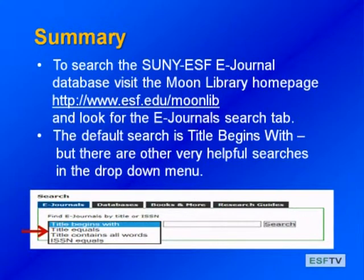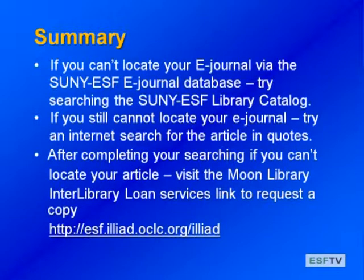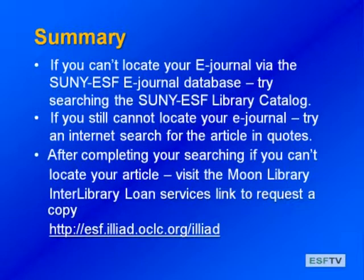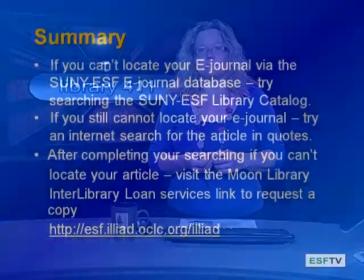To summarize: to search the SUNY ESF e-journal database, go to the Moon Library homepage. The default search is 'title begins with,' but remember there are three other search options — I highly recommend 'title contains all words.' If you can't find your e-journal in the database, go back and try the library catalog — we may have it in print or as an e-journal link. If you still can't find it, try searching the internet for your article in quotes. If you've exhausted all options, try an interlibrary loan, where the library gets the article sent to you as an e-version or photocopy. There are lots of ways we can get your journal articles for you. I hope you've learned something about searching for e-journals today — thanks for joining me.